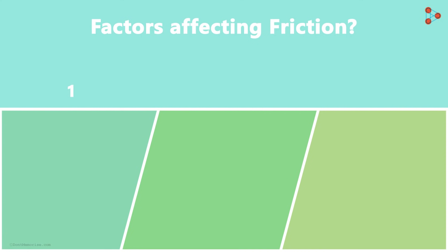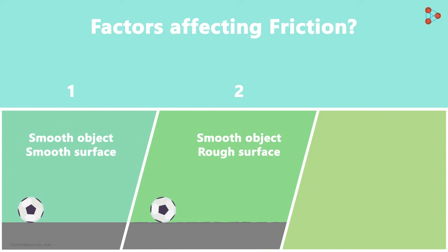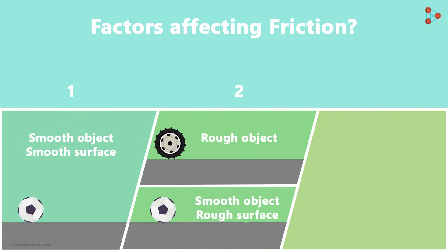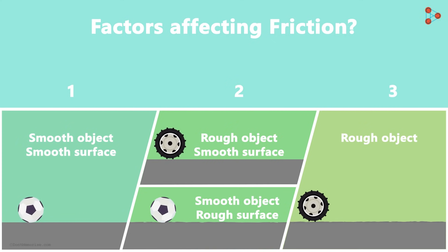The first situation is when an object with a smooth surface is moving on a surface which is very smooth. Second, the object has a smooth surface and the surface on which it moves is rough, or the object has a rough surface and the surface is smooth. In the third case, the surface of the object as well as the surface of the table is rough.